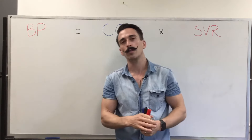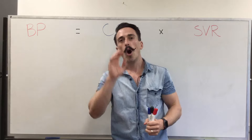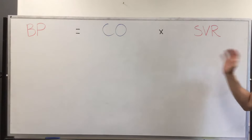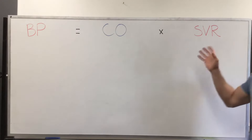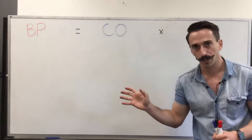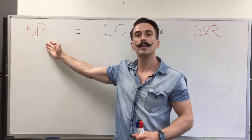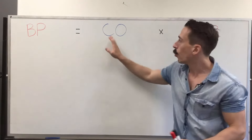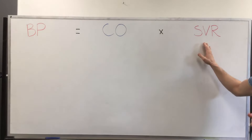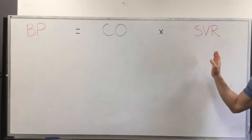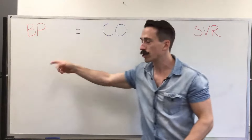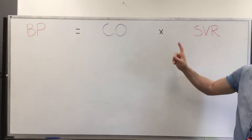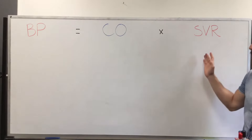And you can classify these different types of shock on this particular equation. This is the equation that determines blood pressure. Blood pressure has to be maintained, and if blood pressure drops, it's because one of these two things have dropped, or both of them have dropped.